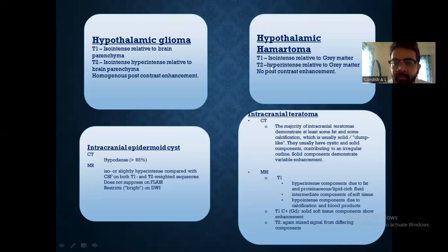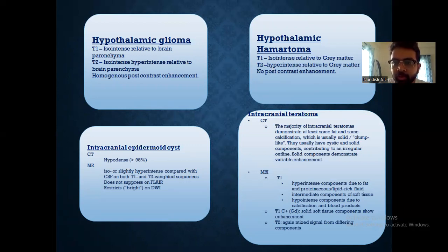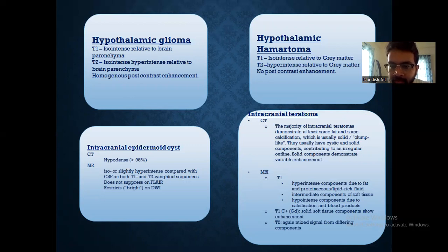Hypothalamic hamartoma: on T1 it appears isointense relative to gray matter, and on T2 it appears hyperintense relative to gray matter, and does not show any post-contrast enhancement. The last differential is intracranial teratoma. On CT, the majority of intracranial teratomas demonstrate at least some fat and some calcification, which is usually solid or clump-like. They usually have cystic and solid components contributing to an irregular outline.